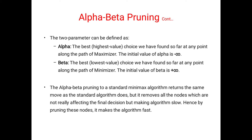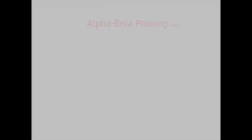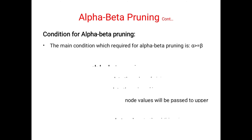Alpha beta pruning applied to a standard minimax algorithm returns the same move as the standard algorithm, but it removes all the nodes which are not really affecting the final decision but making the algorithm slow. By pruning these nodes it makes the algorithm fast. The pruning condition is: if alpha is greater than or equal to beta, we apply pruning.